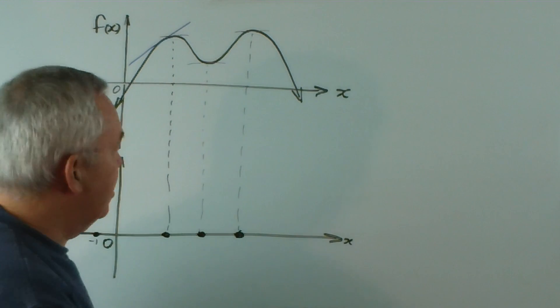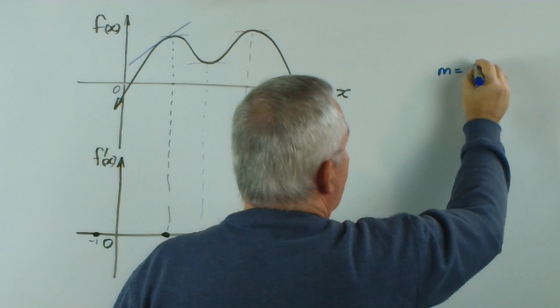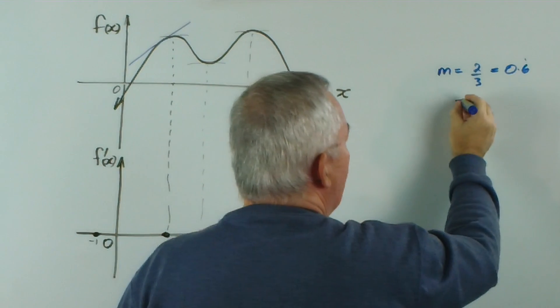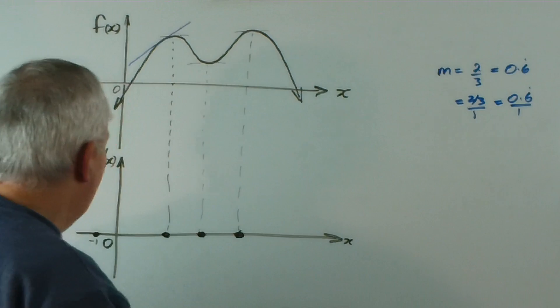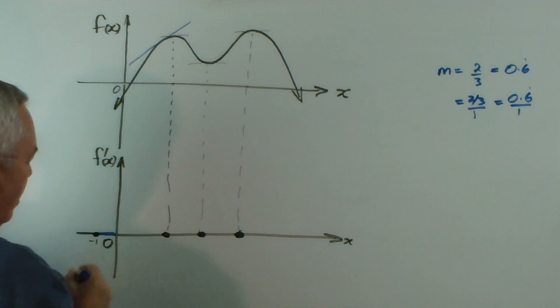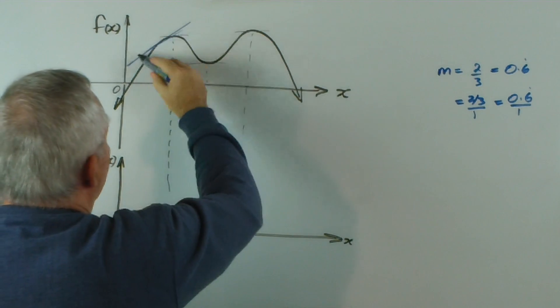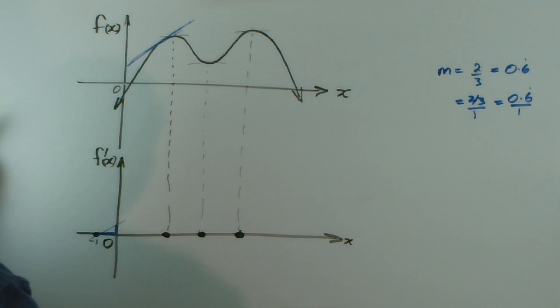But, whatever it is, whether we write the gradient as 2 thirds or 0.6 repeater, either of those could be written over 1. 2 thirds over 1 or 0.6 repeater over 1. And that's why we choose this one unit here. Because if I draw a line parallel to this, here, so that is parallel to that, then this height over 1 is the gradient of this. And, in fact, that height is the gradient, as you can see.